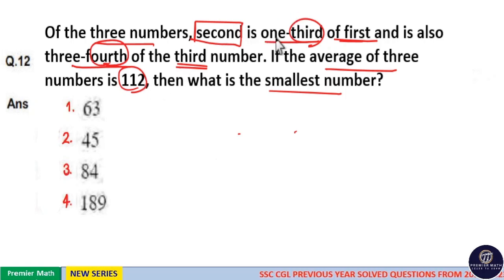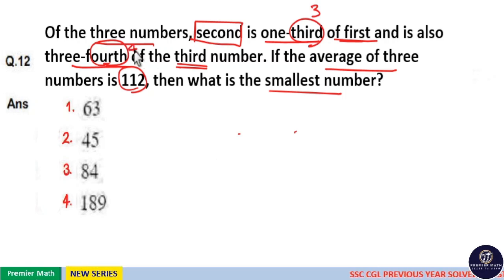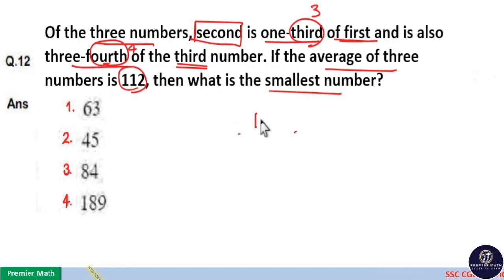Now, in one third the denominator is three, and in three fourth the denominator is four. So four into three is twelve, which is the LCM. I will take the second number as twelve.